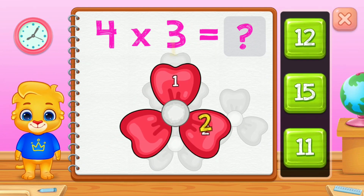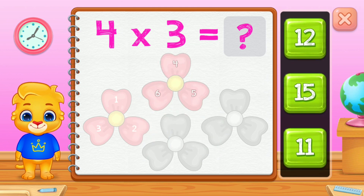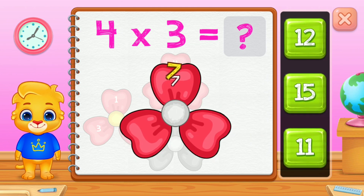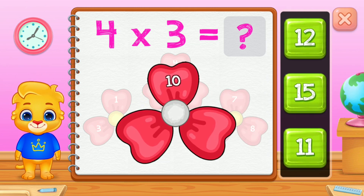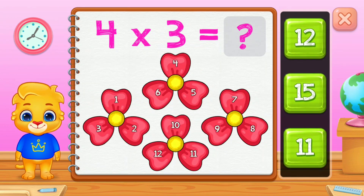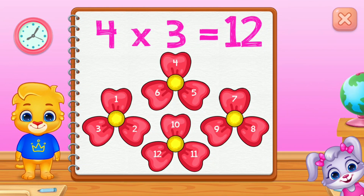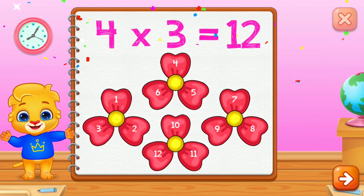One, two, three, four, five, six, seven, eight, nine, ten, eleven, twelve. Twelve. Four groups of three equals twelve.